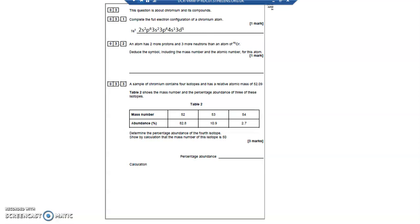Question 3.2: an atom has two more protons and three more neutrons than an atom of 52, 24 Cr. I know if it's got a symbol chromium, it's got an atomic number of 24. So if it's got an atomic number of 24,